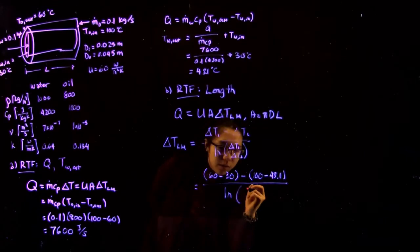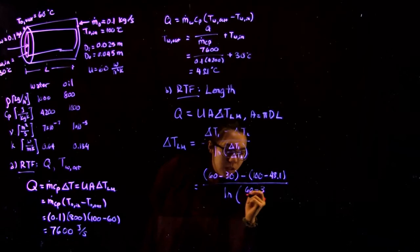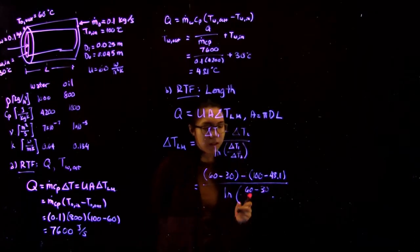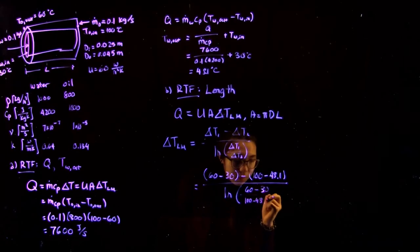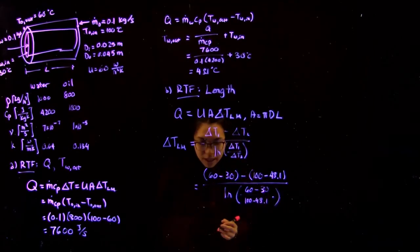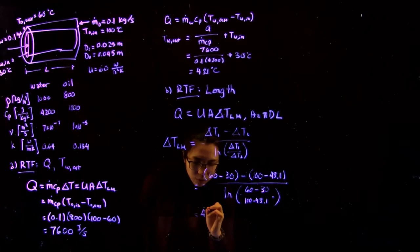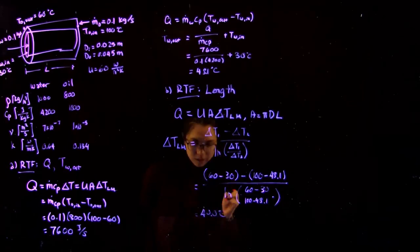So find this by the ln of those differences: 60 minus 30 over 100 minus 48.1. And that gives a log mean temperature of 40 degrees Celsius.